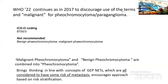WHO 2022 continues, as in 2017, to discourage the use of the terms benign and malignant for pheochromocytoma and paraganglioma. Sympathetic paragangliomas and pheochromocytomas are all coded as malignant. The terms benign pheochromocytoma and malignant pheochromocytoma are not recommended — they are all combined into pheochromocytoma in the new Blue Book. This brings thinking into line with concepts of gastroenteropancreatic NETs, which are all considered to have some risk of metastasis, and this approach encourages risk stratification rather than binary classification.